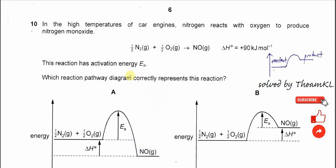Question 10. In the high temperature of car engines, nitrogen reacts with oxygen to produce nitrogen monoxide, as shown in this equation. The enthalpy change is positive 90 kilojoules per mole, so it's endothermic.